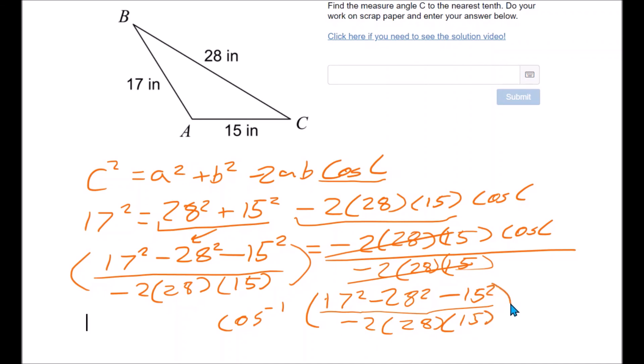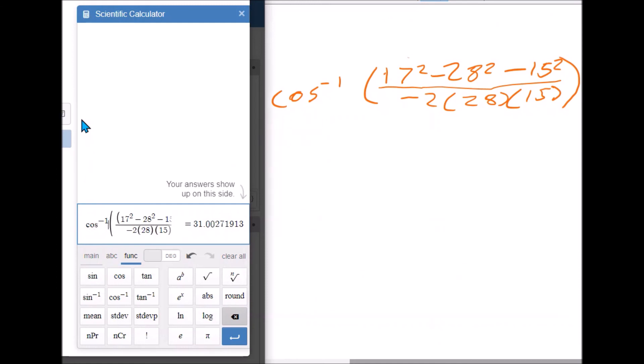So here you can see I have entered the entire thing into my handy-dandy Desmos Scientific Calculator. And there it is. And it calculated it for me 31, I think, to the nearest tenth. It said 31.0 degrees. And that's all there is to it.